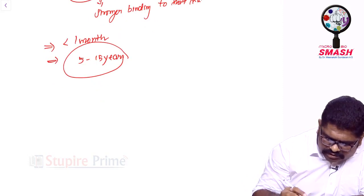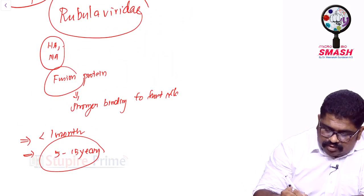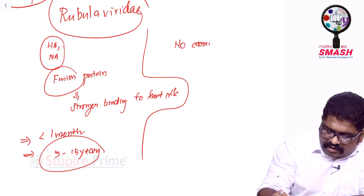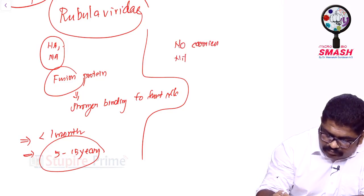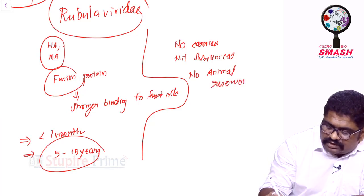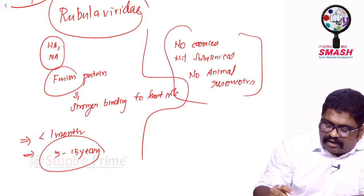Like measles, there is no carrier state in mumps, and subclinical cases are also nil. You have no animal reservoirs. These three statements go parallel to both measles and mumps.